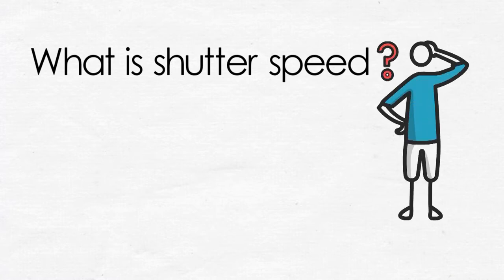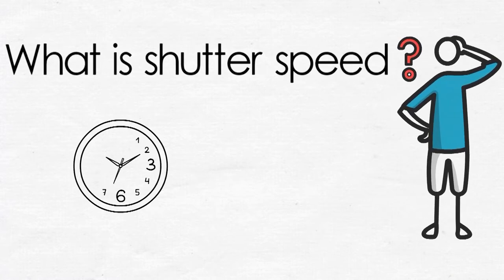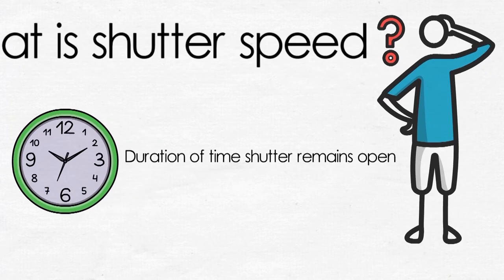What is shutter speed? Shutter speed is nothing but the duration of time that the shutter remains open. Shutter speed is something like a window in a dark room — open the window, light comes in; close the window, light goes out. This is more or less what shutter speed is all about.